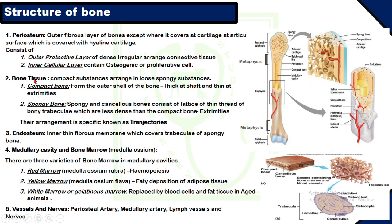The second structure is bone tissue — a compact rigid substance arranged in a loose spongy substance. There are two types of bone tissue: number one, compact bone, which forms the outer shell of the bone. As seen in the picture, the compact bone forms the outer shell and is thick at the shaft or diaphysis and thin at the extremities or epiphysis. Spongy bone is a cancellous bone consisting of a lattice of thin threads of bony trabeculae, which are less dense than compact bone.